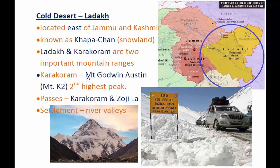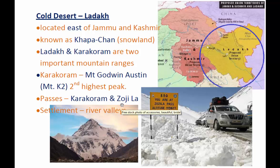Mount Godwin Austin — Mount K2 — which is the second highest peak in the world, is located in this Ladakh. They also have many passes. The first one is the Karakoram Pass, and another one is the Zoji La Pass. As you can see from the textbook itself, it has been written as Zoji La Pass. Only through these passes can people travel to and from these places.